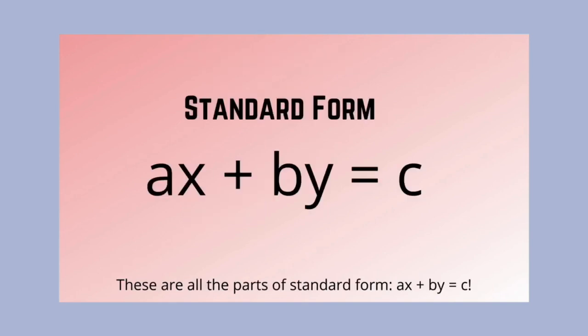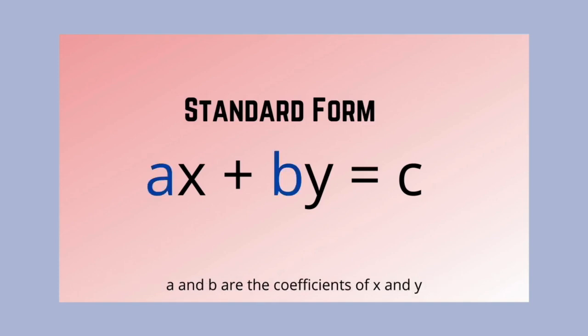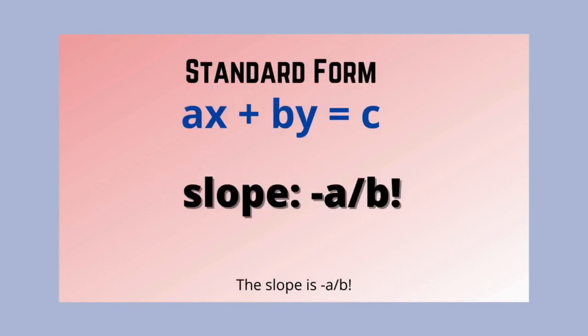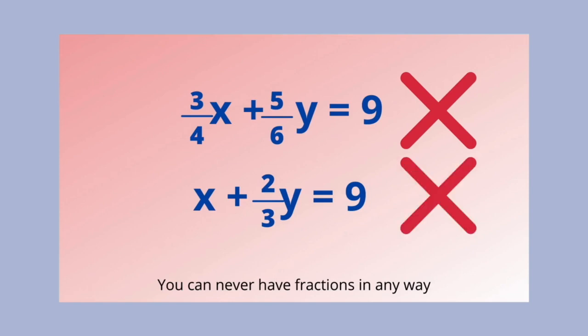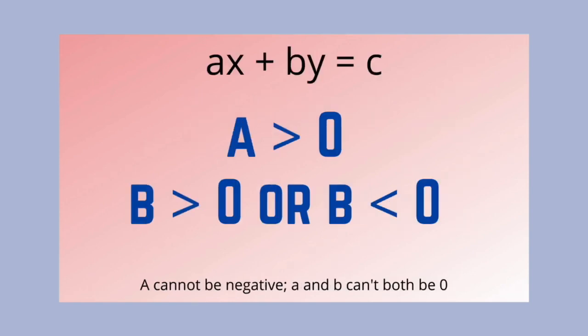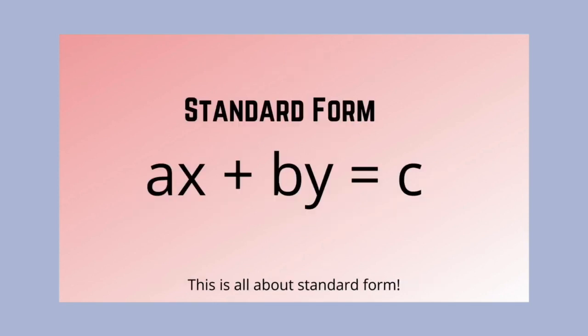These are all the parts of standard form: ax plus by equals c. A and B are the coefficients of x and y. The slope is negative a over b. You can never have fractions. A cannot be negative, and A and B can't both be zero. This is all about standard form.